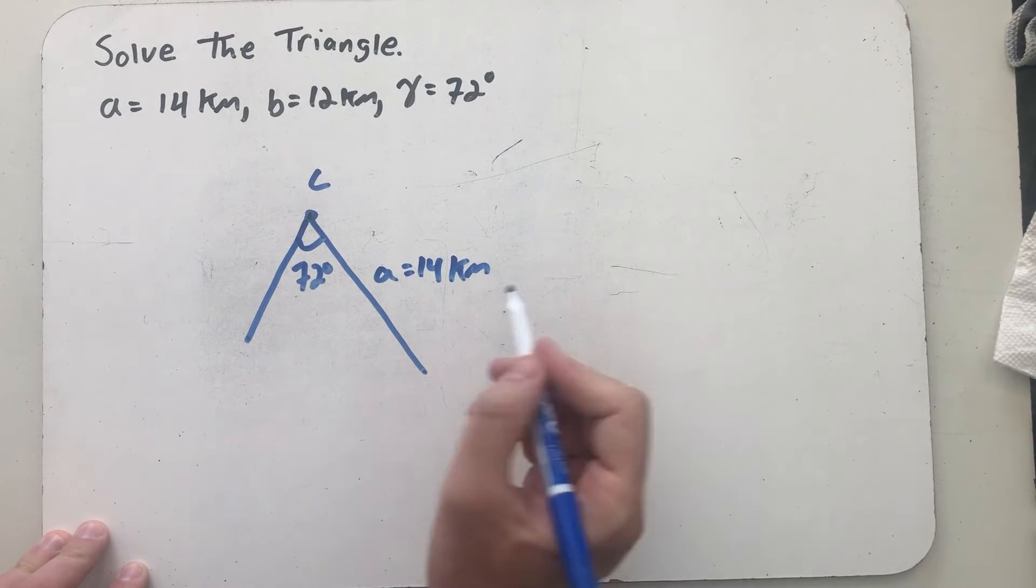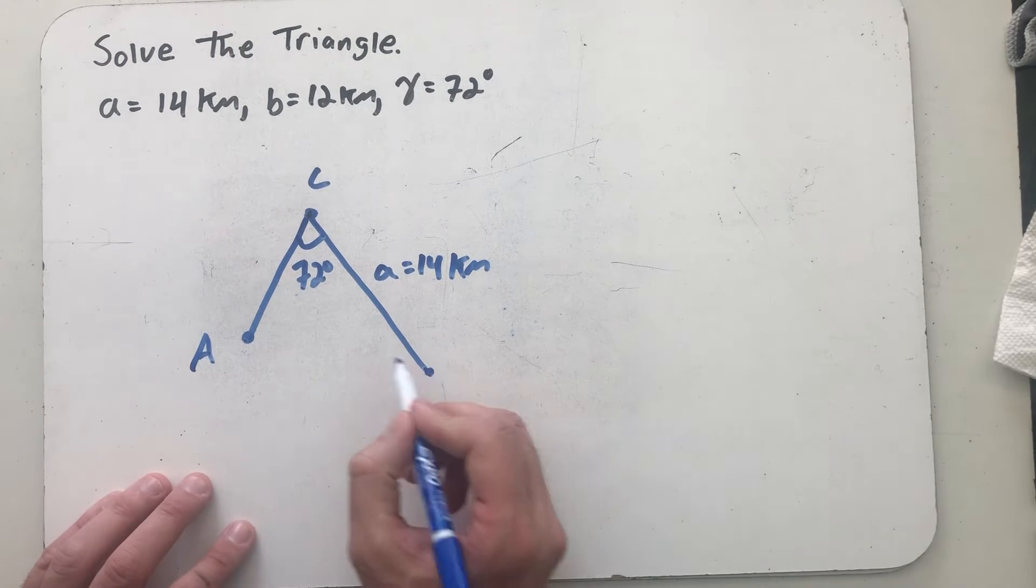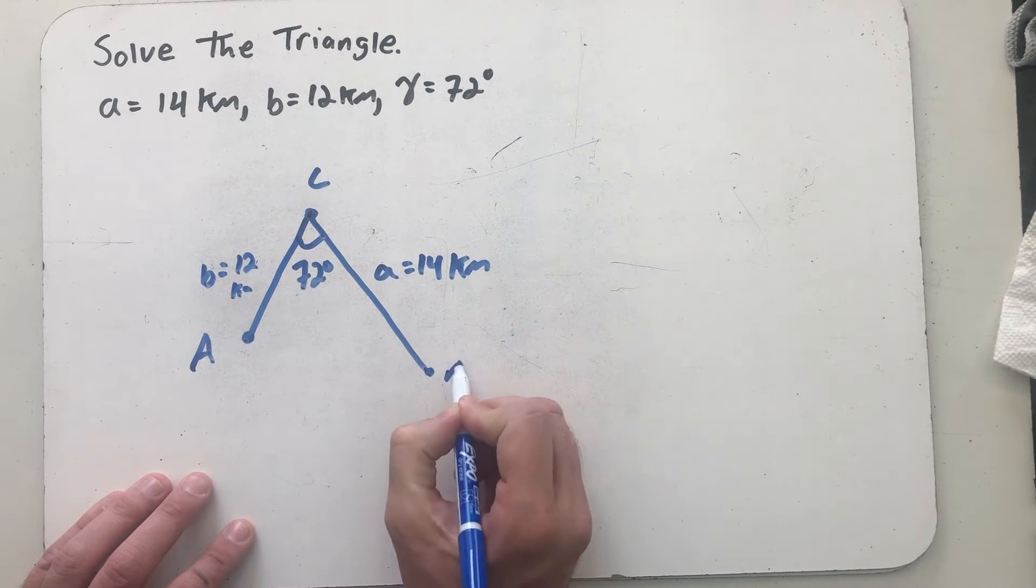So I'll just let that be A, making this vertex A, and that would make this side B, 12 kilometers long, making this vertex B.